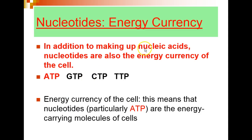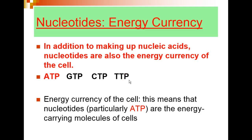In addition to making up nucleic acids RNA and DNA, nucleotides are also the energy currency of the cell. ATP (adenosine triphosphate), GTP, CTP, and TTP can be used by cells as energy molecules. In most instances, ATP, adenosine triphosphate, is the preferred energy-carrying molecule of cells.